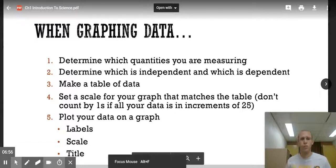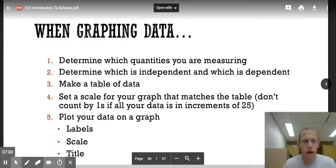That's all the examples we have. But just a few notes, when you're actually graphing data, you want to make sure you know which quantities you're actually measuring. So then you have the two axes, or you know what you're putting into your pie chart. Make sure you know which is the independent and which is the dependent variable. Make a table of your data if you need to.